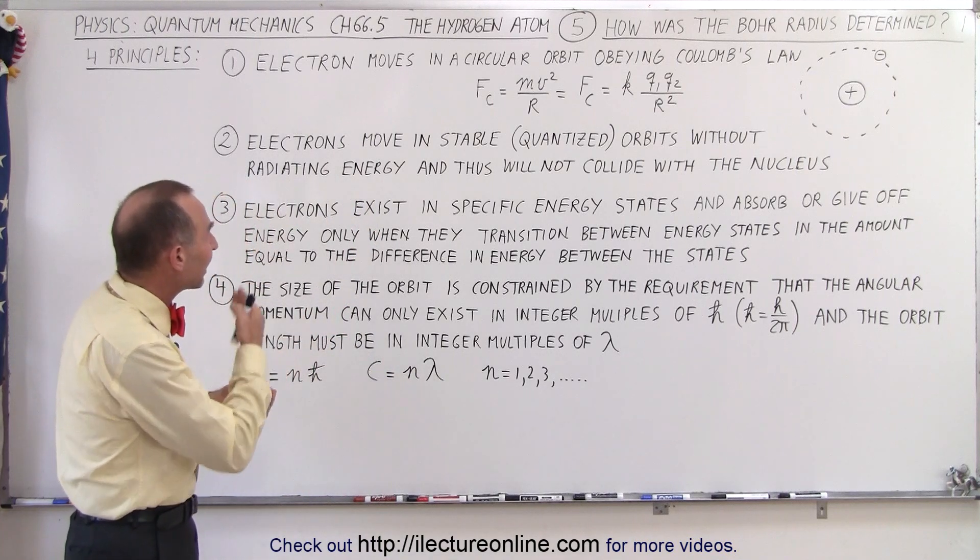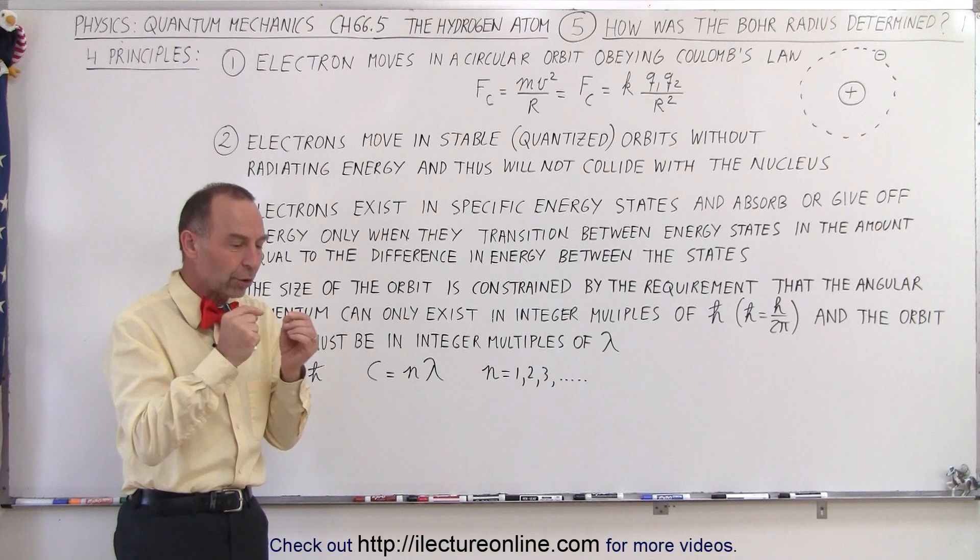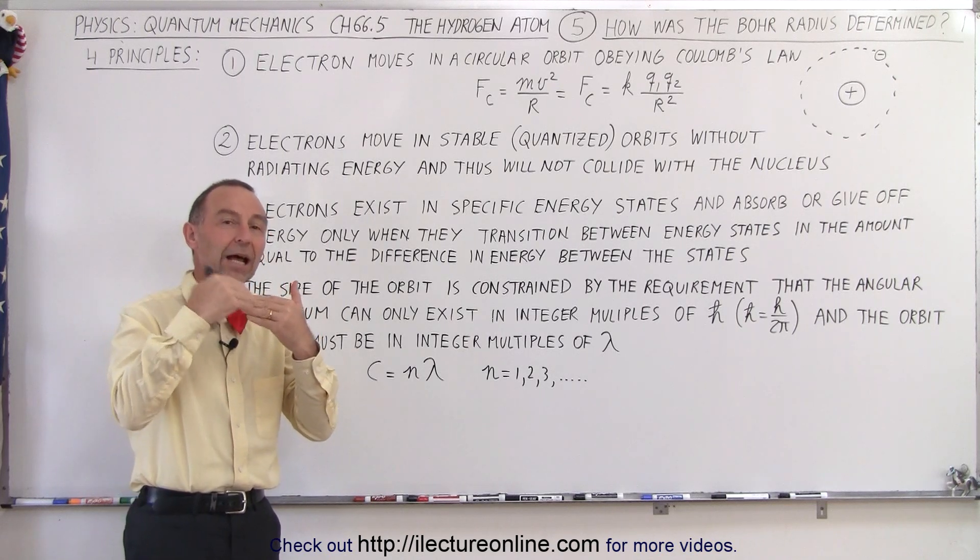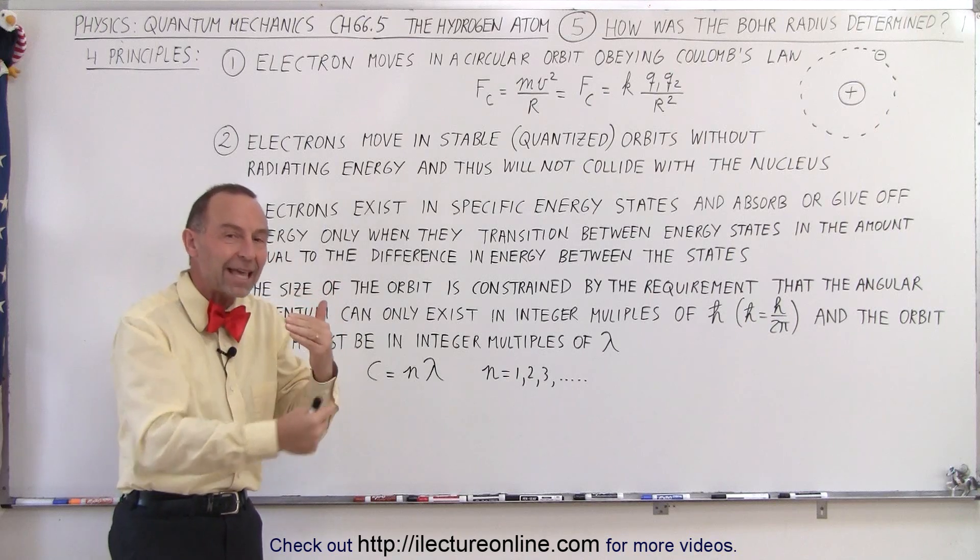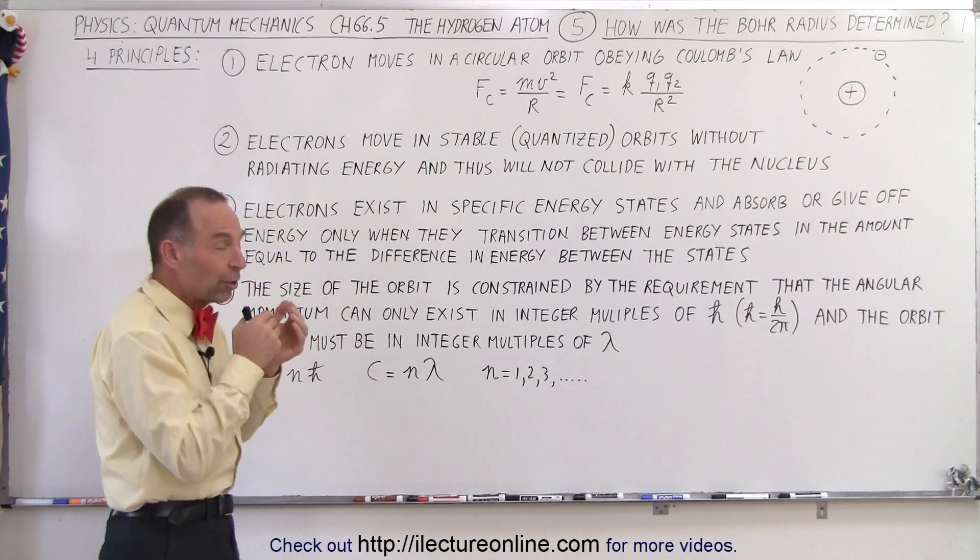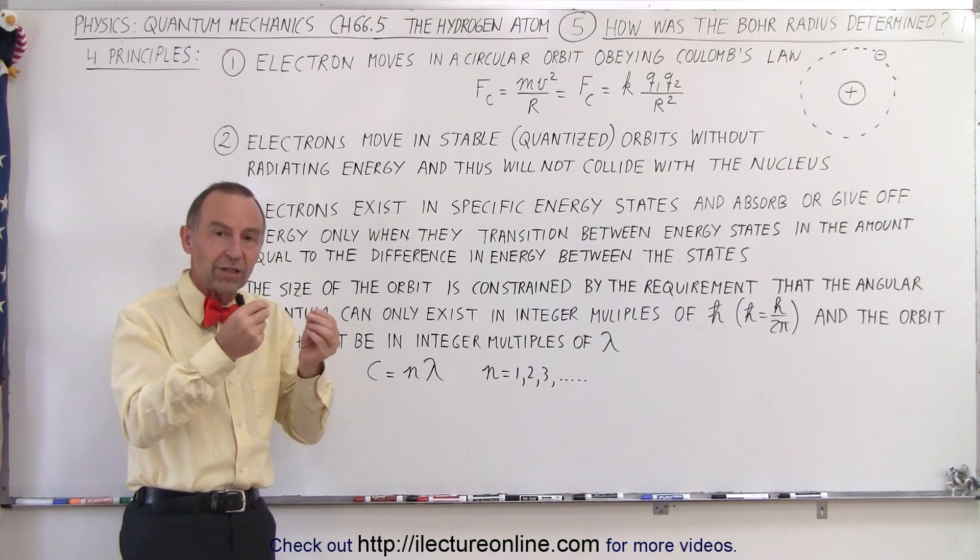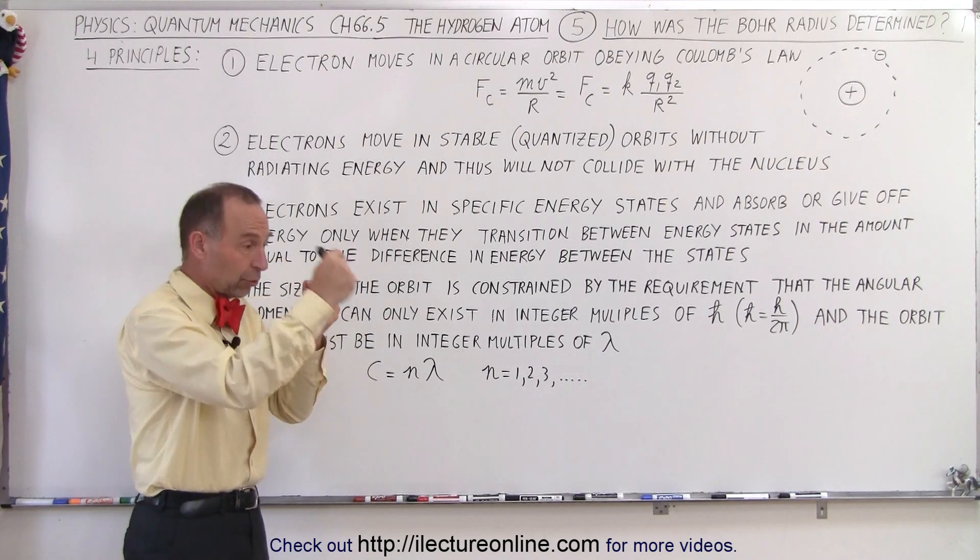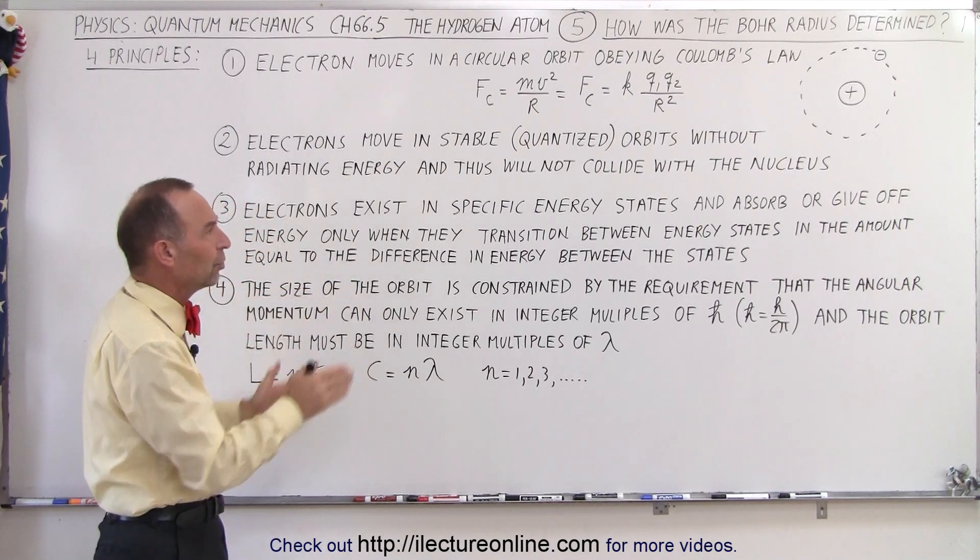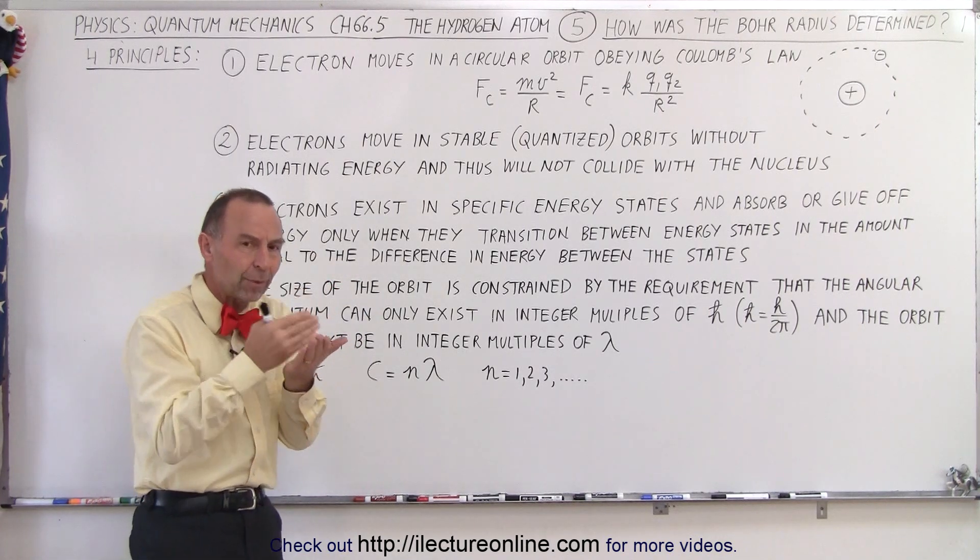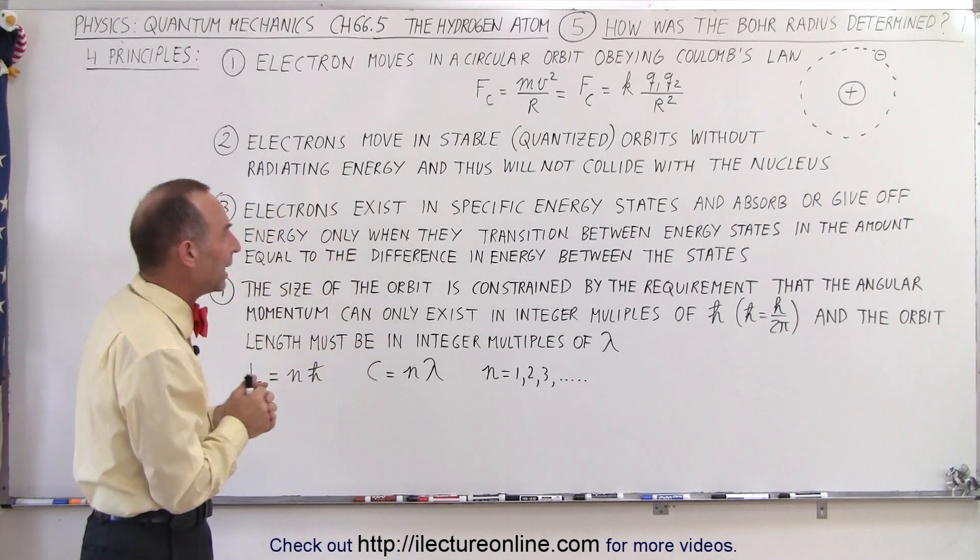The next principle was that electrons must move in stable quantized orbits. In other words, they did not radiate out any energy, so the radius of the orbit must remain the same as they orbit around the nucleus. If they were radiating energy, then the electron would lose energy, therefore lose velocity, and would spiral inwards to the nucleus. It doesn't do that, it doesn't collide with the nucleus, so it must stay in what we call quantized orbits without radiating energy.